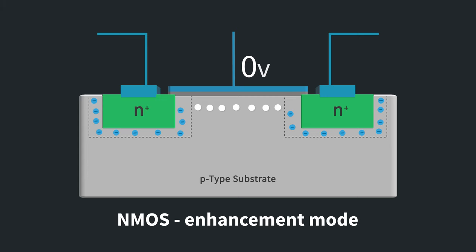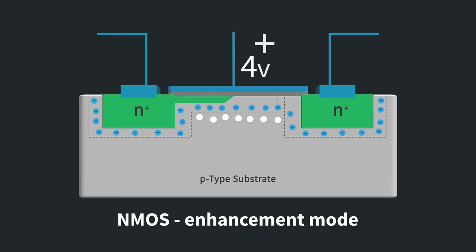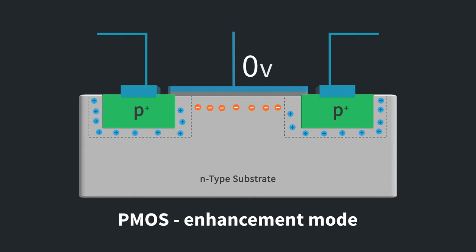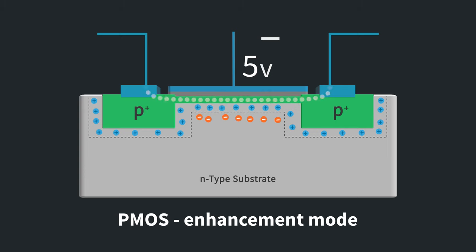With an NMOS, the current carrier is electrons, so as you have a positive charge, it attracts those negative electrons to the channel, and then it can conduct. With a PMOS, the current carrier is holes, so as you have a negative charge, it attracts those positively charged holes to the channel, and then it can conduct.